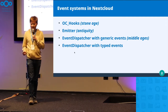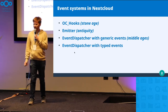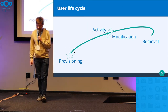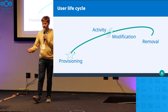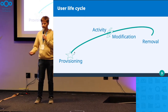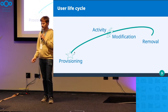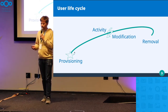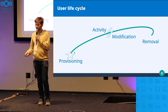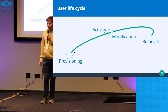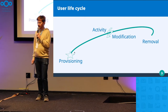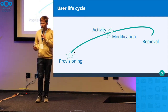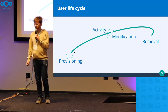I wanted to see first where the user events actually are. We have different user backends: the local ones like the database which is built-in, or the guests app which is also a local backend. You can source users from other places like LDAP, SAML, or OpenID. Some remote backends can also be written to — there's a plugin to write back to LDAP — which makes things a bit more complicated.